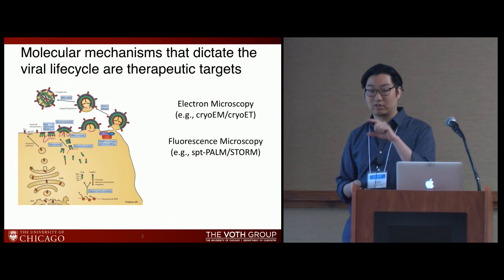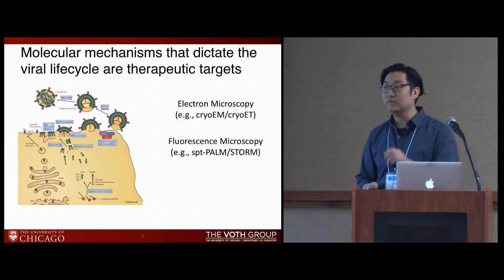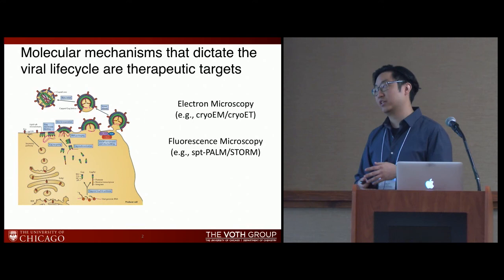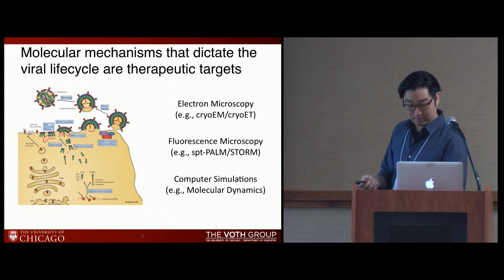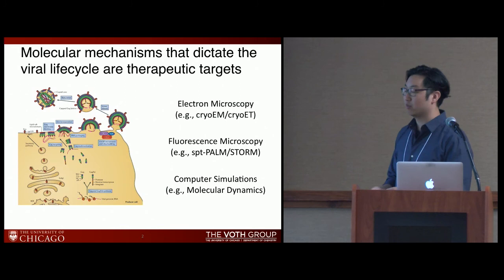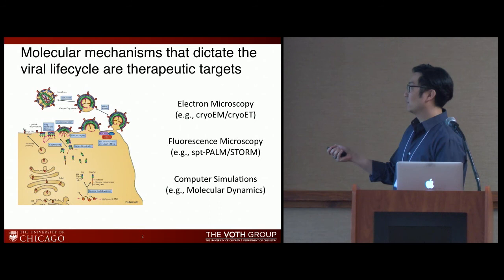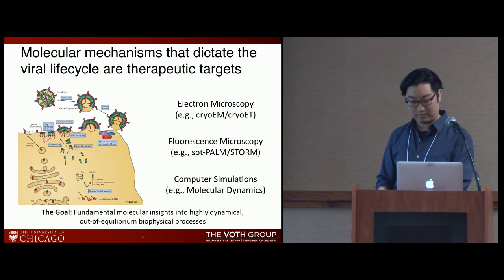A complementary technique is fluorescence microscopy — things like STORM or SPT-POM — where fluorescent tags track proteins at the single-particle level, giving a dynamic picture. The limitation is resolution of about 10 to 20 nanometers at best. The approach we use today is computer simulations, primarily molecular dynamics, which gives us both molecular resolution and dynamic information. Of course, models don't mean anything without validation or predictive power, so in reality we need all three approaches.